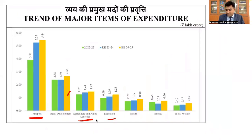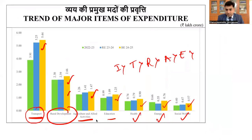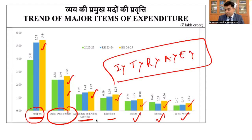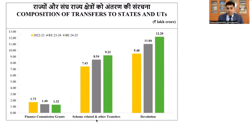Looking at major expenses: after interest payments, the government is spending on transport, rural development, agriculture, education, health, energy, and social welfare — in descending order. The yellow portion is the central sector budget. A memory trick: transport goes to villages, you find rural development; inside rural areas, agriculture is there; children's education and health will be there; then energy and social welfare. These are the things in descending order of government expenses.